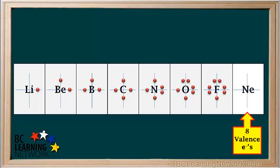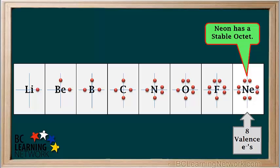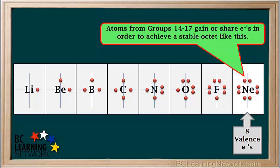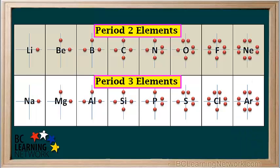The last element in period 2 is neon, a noble gas in group 18 with eight valence electrons. Its Lewis diagram has four lone pairs around it. This is called the stable octet, representing a very stable electron arrangement where the highest occupied shell is completely filled. All noble gases except helium have a Lewis diagram like this. Atoms from groups 14 to 17 gain or share electrons to achieve a stable octet. Because elements in the same group have the same number of valence electrons, elements in period 3 have exactly the same Lewis diagrams as those in period 2, as do elements in periods 4, 5, and 6.